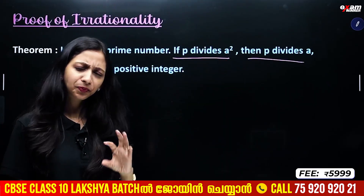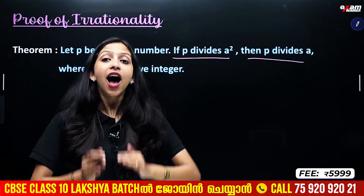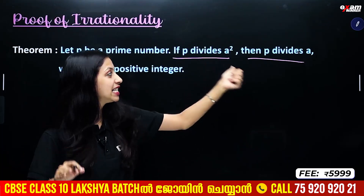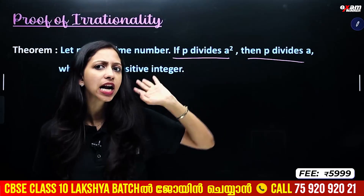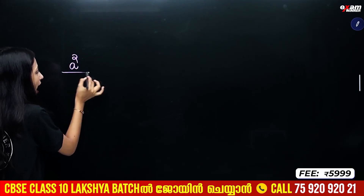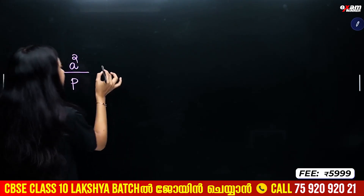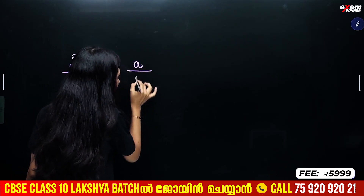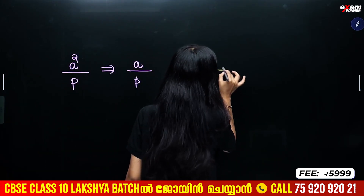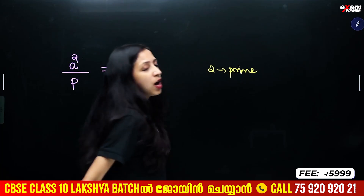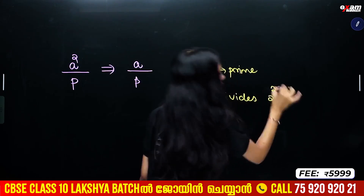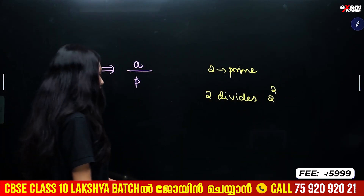This is a positive integer. If the positive integer is the square, we divide by p. If we divide by a positive integer, we divide by p. This is the simple idea. If we divide by a square, we divide by p. For example, 2 divides 2 squared, which is 4.